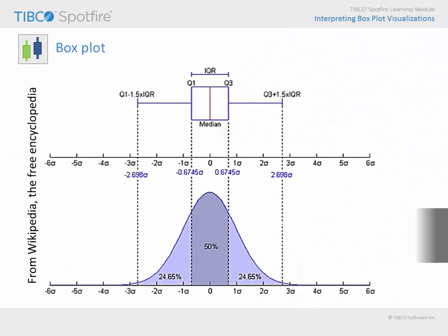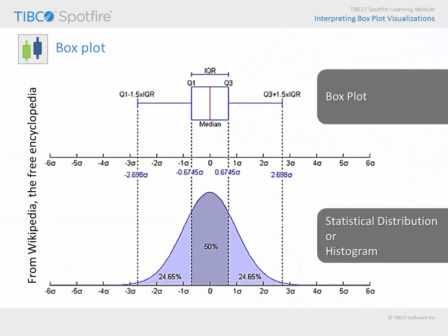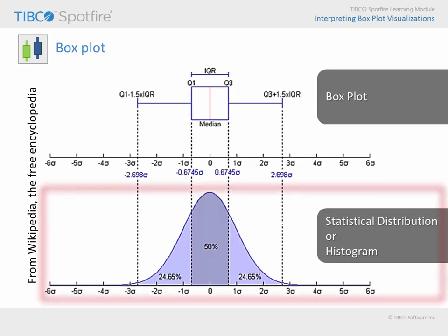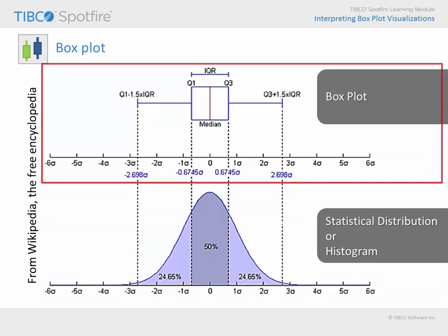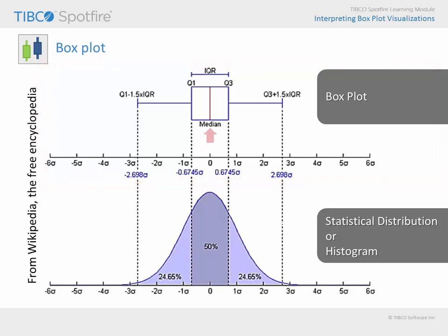Boxplots are a visualization type useful for examining data distributions and making comparisons of those distributions using a set of symbols. Here you can see the general description of boxplot symbols lifted from Wikipedia. On the bottom, a normally distributed continuous variable is shown in the form of a histogram, and above, the boxplot symbols corresponding to that distribution. The median is represented as a line, the first and third quartile, or 25th and 75th percentiles, are shown as the edges of the box, and extensions representing the tails of the distribution terminate at the upper and lower adjacent value.